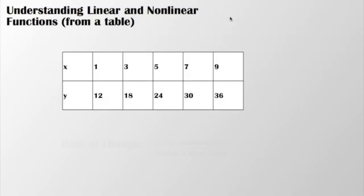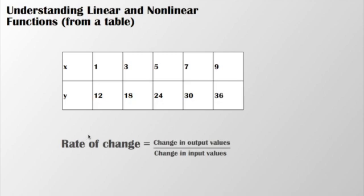Right now we're going to focus on understanding linear and non-linear functions from a table. When looking at a table, what we want to do is focus on the rate of change. We want to focus on the change in the output values over the change in the input values. That rate of change is similarly related to the slope in a linear relationship.